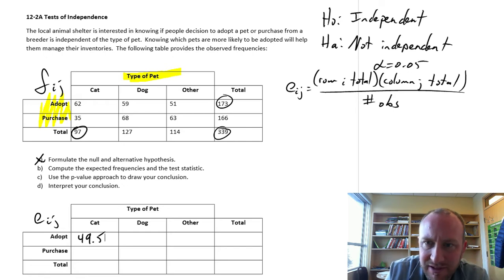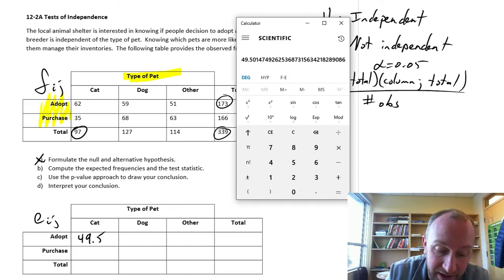Right? These expected frequencies, it's always, if they're independent, then these give us those expected proportions that we would expect, we would see.